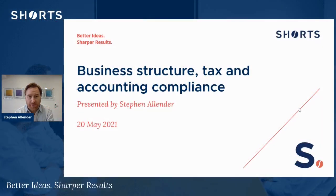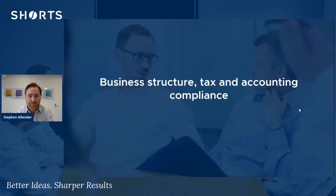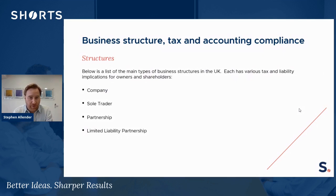Hi, my name is Steve Allender, one of the senior tax managers at Shorts. I'm going to be looking at business structures and the difference in tax and accounting compliance for each. When setting up a business in the UK, there are effectively four main ways this can be done, each with their own tax and liability implications for the owners and shareholders.